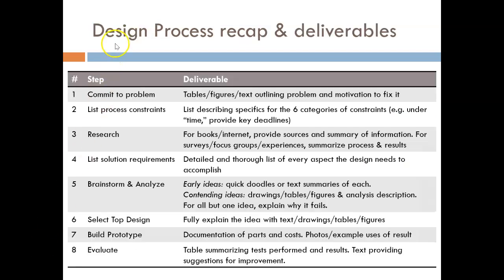This last slide here is a recap of the entire design process. It lists each of the steps as before, but now it adds something that may be very helpful to you as you work on your own designs — ideas for deliverables. So when you're working on a project and you're on, say, step five, you know you should be brainstorming, but what does that look like? Well, here you see that your scratch papers should end up holding quick doodles or text summaries of any early ideas. Hold on to this table. Working on a design can be abstract and messy, which can lead to poor results or confusion as to what to do next. Use the design process as a lamp to your feet guiding your next step. Use the deliverables as tangible examples of what you should be working on.